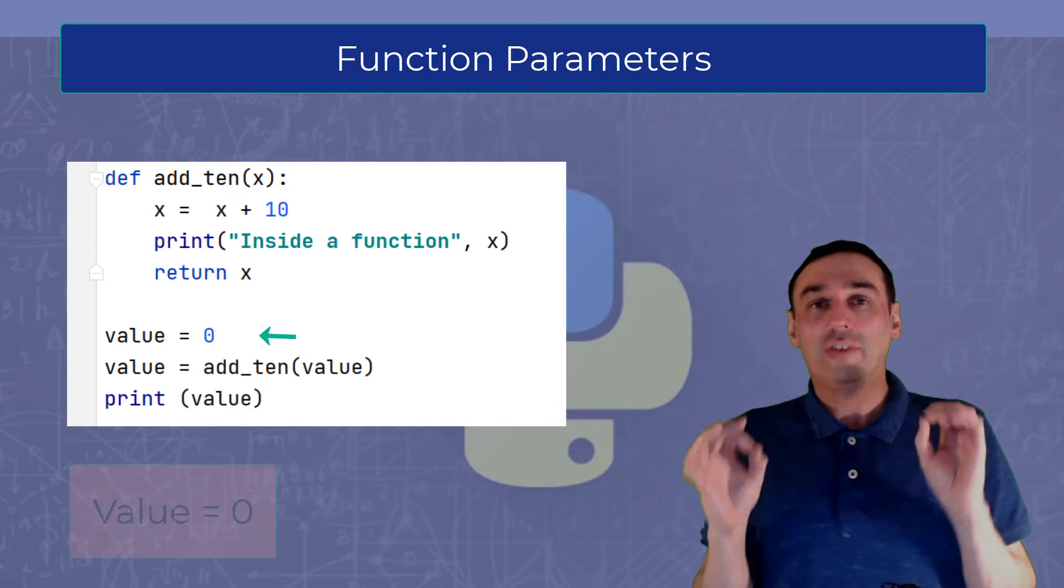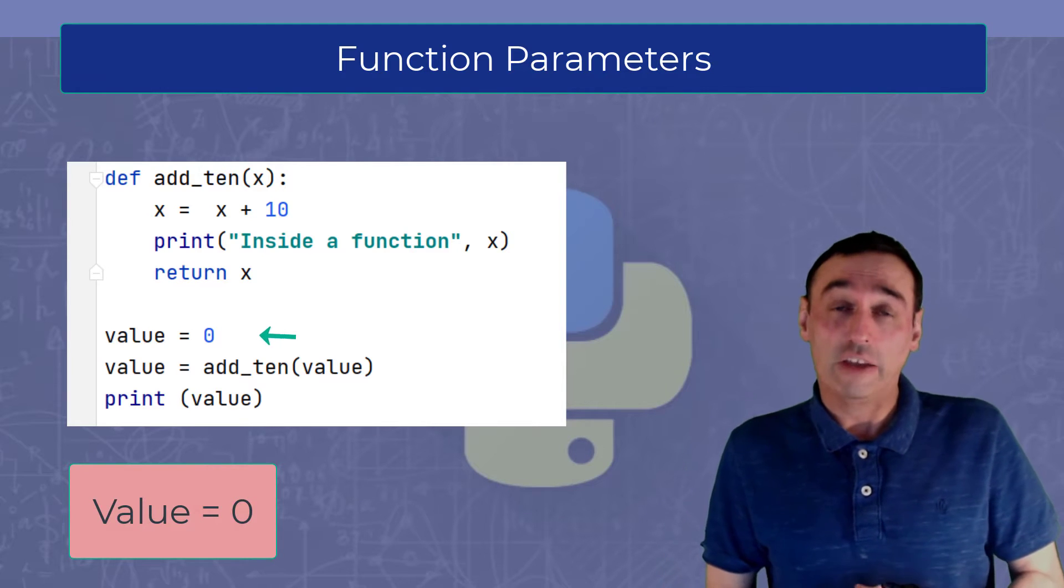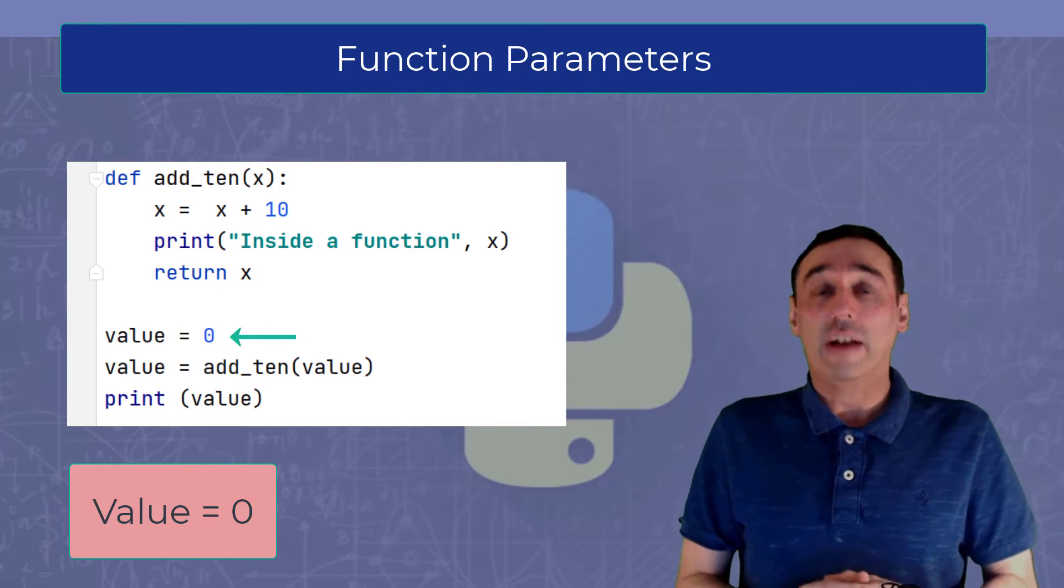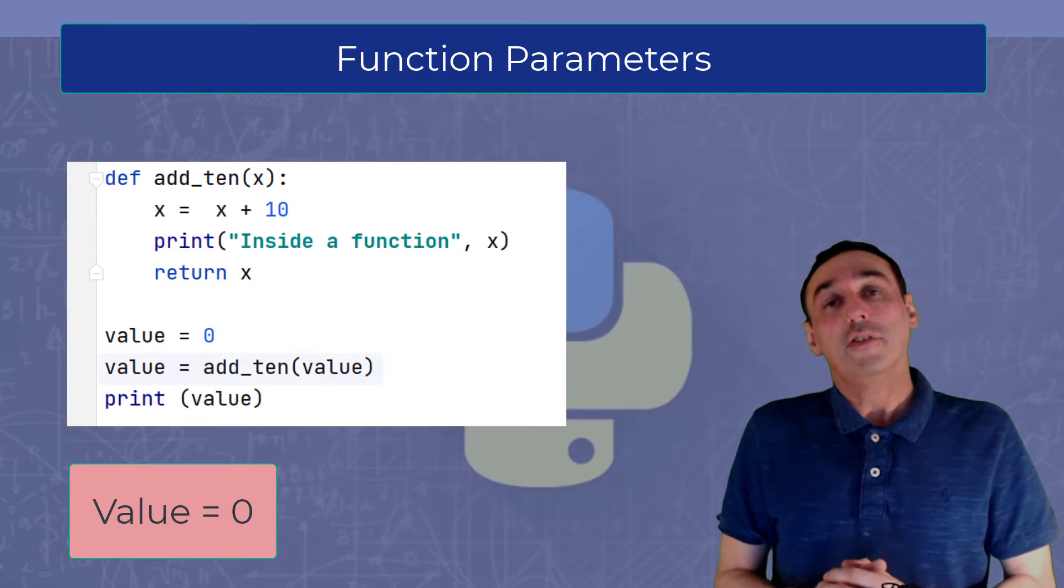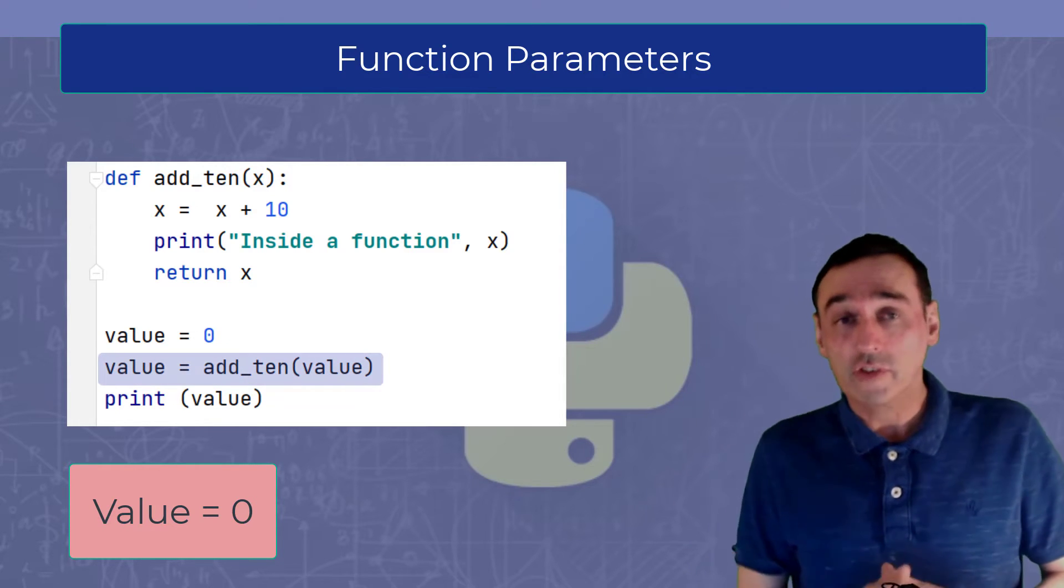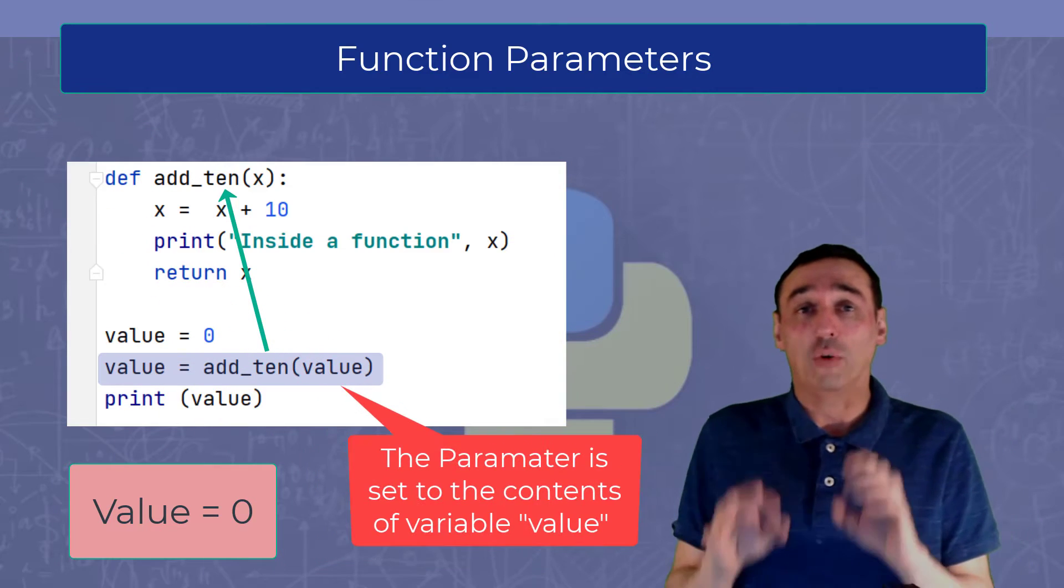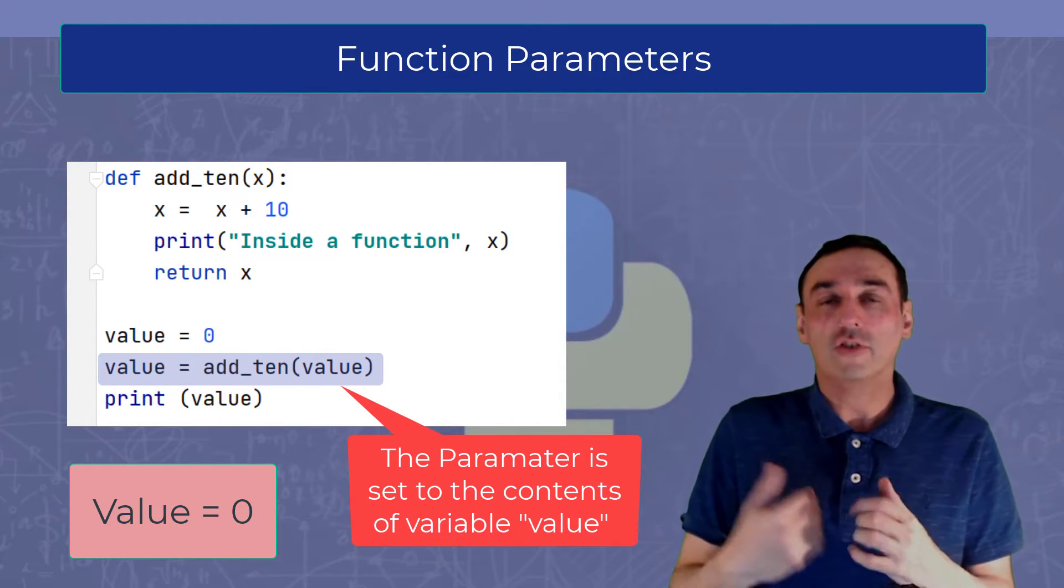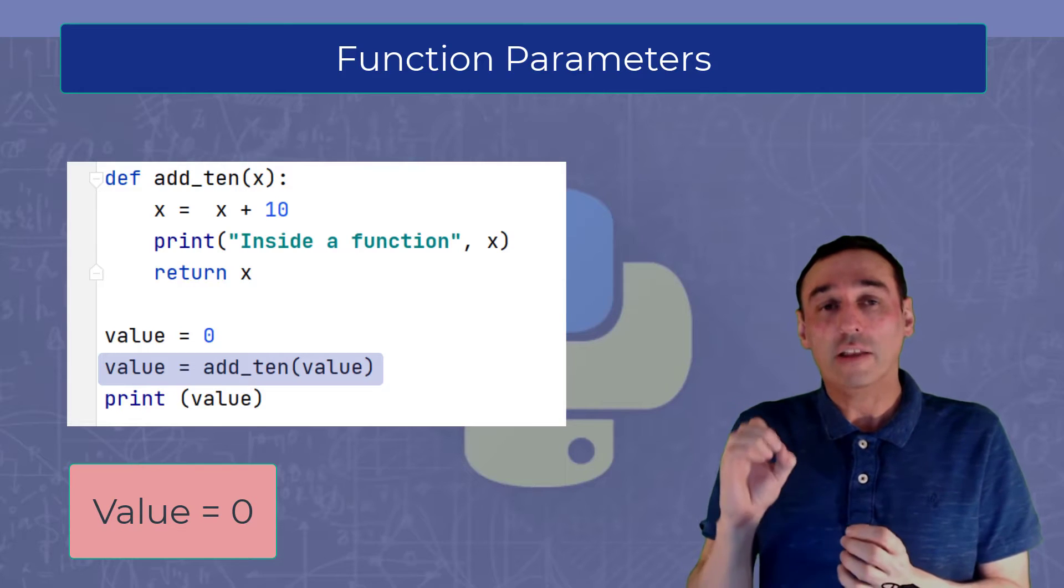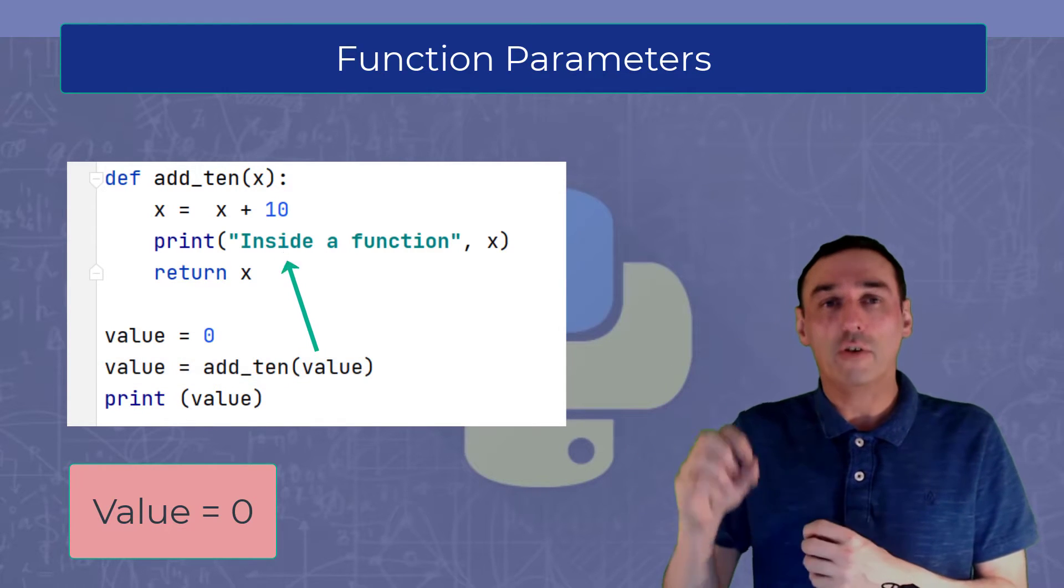So let's run the rest of the program. We set value to zero as you can see here. We then set value to wherever the function add_ten will return. So we will call the function add_ten with the contents of value, which is currently zero. So as you can see in the program here, the value is zero, so we send 0 to the function add_ten.